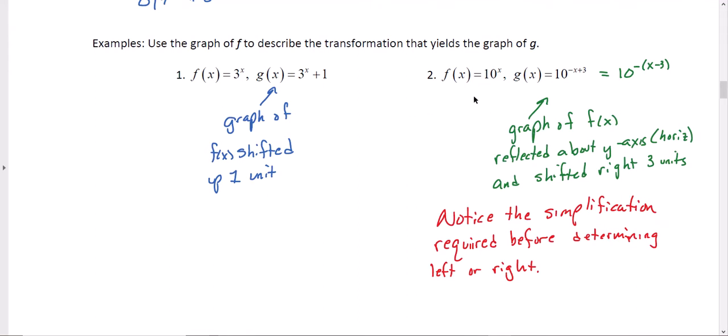For number 2, my basic function is f(x) = 10^x. My new function is 10^(-x+3). Now, anytime you have a negative with your x, you're going to want to factor that out first to get an accurate idea of what's actually going on. So, if I factor that negative out of the exponent, I'll have 10^(-(x-3)).